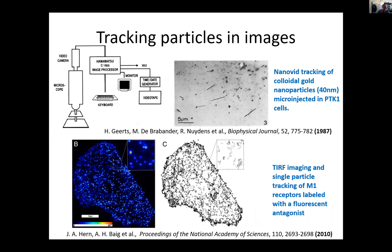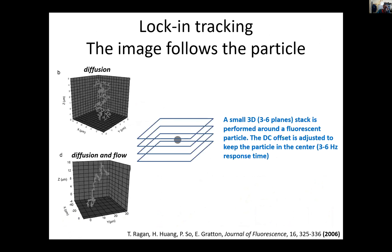Here are some examples from biology — an old example from the 1980s and more modern cases — all using the same approach: take images in time and assign objects from one image to the next. A technique developed here in the lab addresses the background pixel inefficiency: instead of imaging everything, you scan a very small range above and below your object. Using a feedback loop, you scan toward the object, tracking it in 3D while imaging only a localized space — typically three to six stacked planes.